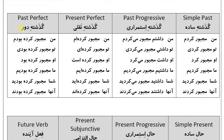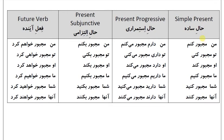گذشته دور (Past Perfect): من مجبور کرده بودم، تو مجبور کرده بودی. حال ساده (Simple Present): من مجبور کنم.